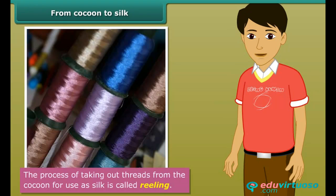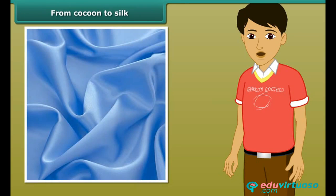The process of taking out threads from the cocoon for use as silk is called reeling. These silk threads are then used to manufacture silk fabric.